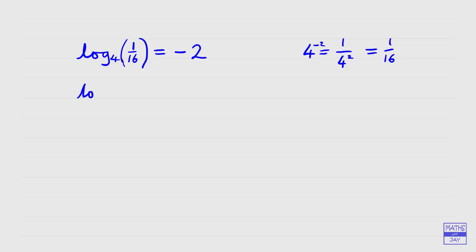Let's have a look at another similar one: log to base 2, and this time we'll write it as a decimal — log to base 2 of 0.5. We're trying to write this as 2 to the power of something equals 0.5. Well, 0.5 is a half, which is 1 over 2 to the power of 1, so that means we've got 2 to the negative 1. So the log of 0.5 in base 2 is negative 1, because 2 to the power of negative 1 is 0.5.